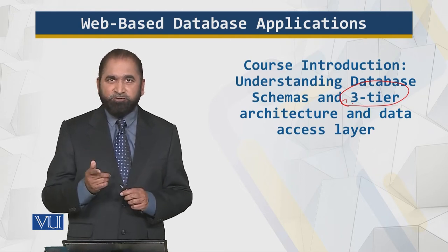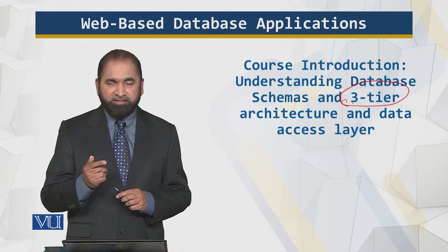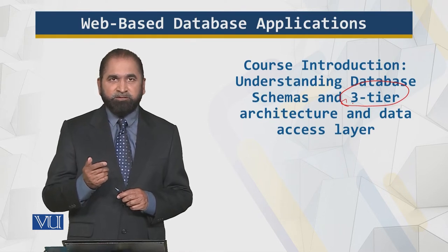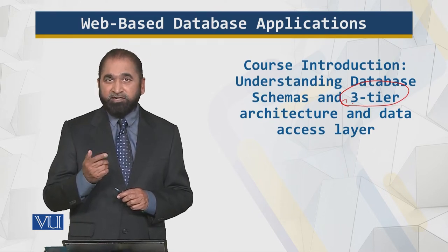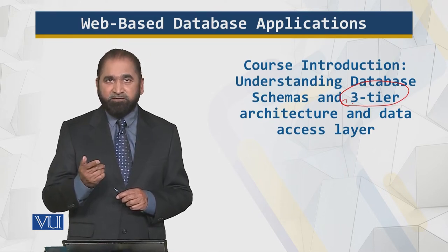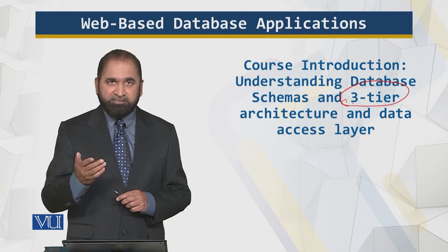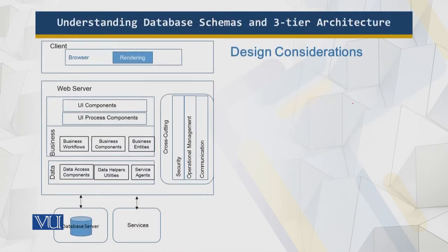I will explain it to you diagrammatically and things will become more simple and understandable. I will enhance that understanding with more examples. These are the design considerations for a three-tier architecture. You can call it the client tier, the web server tier, and the database tier.